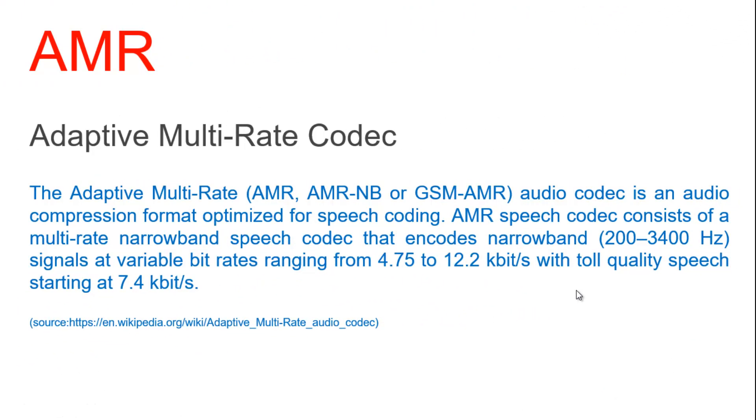AMR stands for Adaptive Multi-Rate, also known as AMR-NB or GSM-AMR. It is an audio compression format optimized for speech coding. The AMR speech codec consists of a multi-rate narrowband speech codec that encodes narrowband 200 to 3400 Hz signals at variable bit rates ranging from 4.75 to 12.2 kilobits per second, with good quality speech starting at 7.4 kilobits per second.